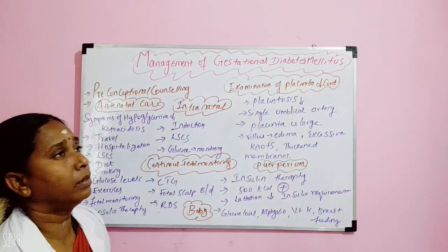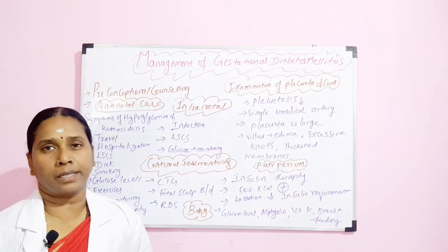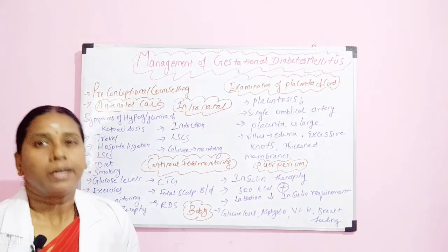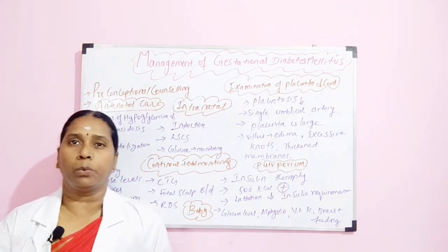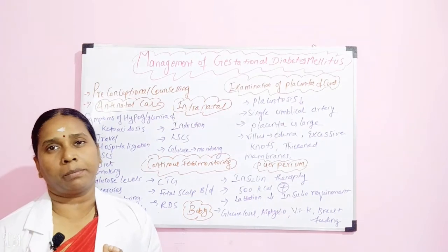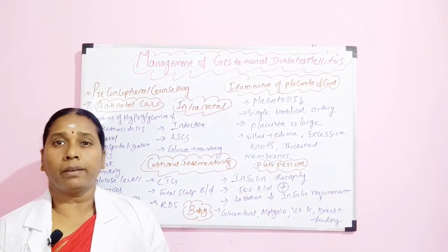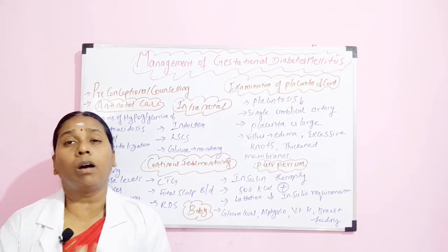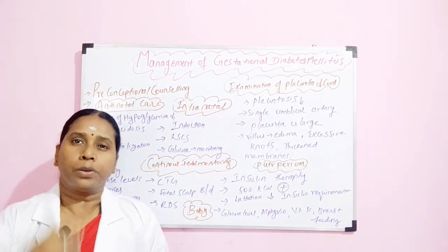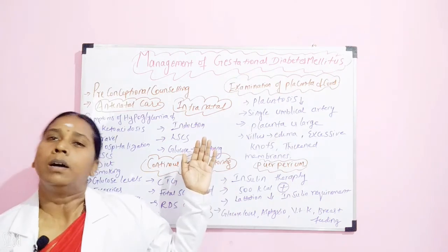When we come to antenatal management, before we start with pregnancy we are supposed to give prenatal counseling. This counseling is for mothers who are at risk of gestational diabetes. In that counseling, you have to give a clear idea about gestational diabetes to the mother — what happens for the mother, for the child, for the neonate, and in future; what will happen during the labor process. You explain whether she wants to continue with the pregnancy or not.